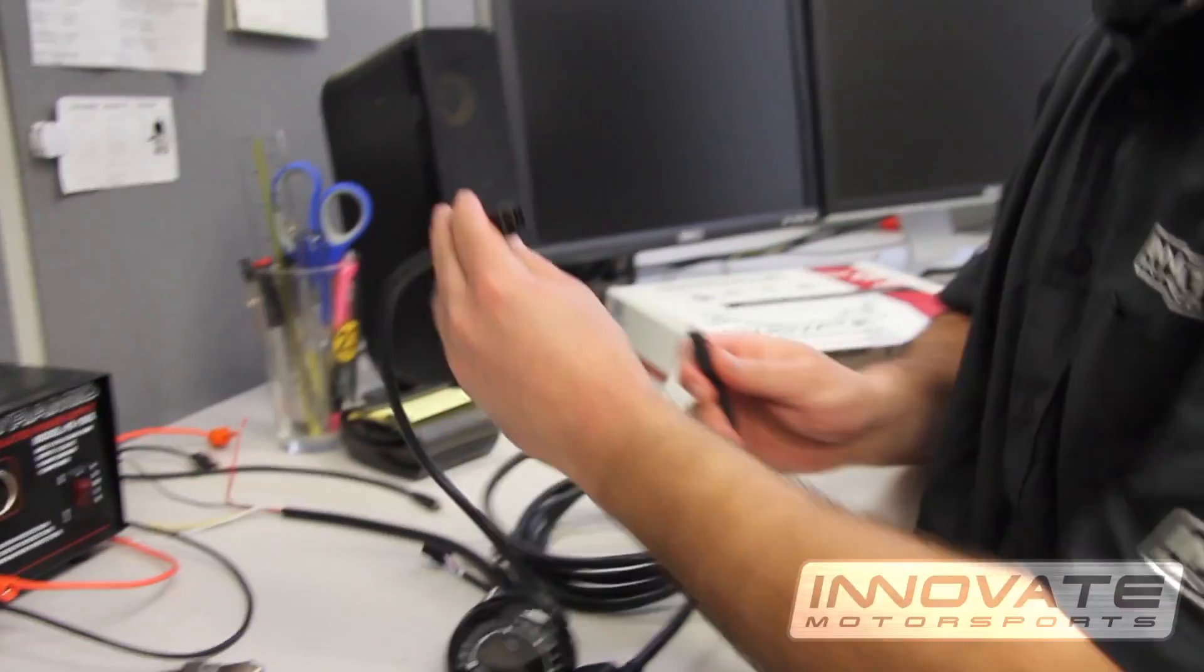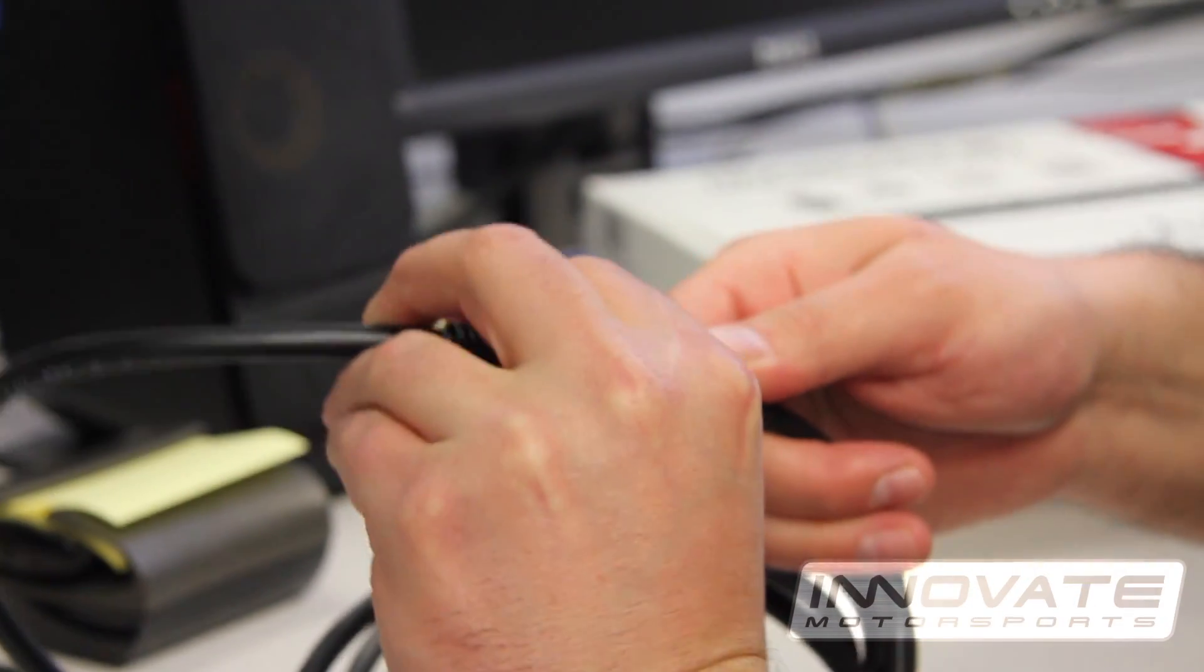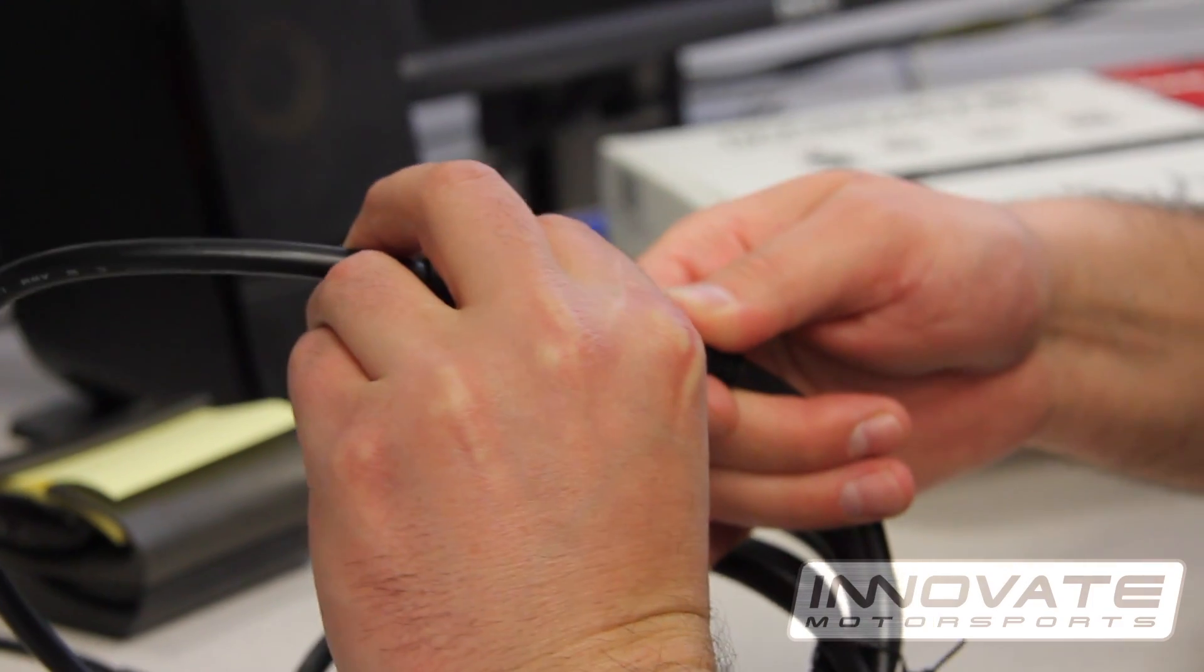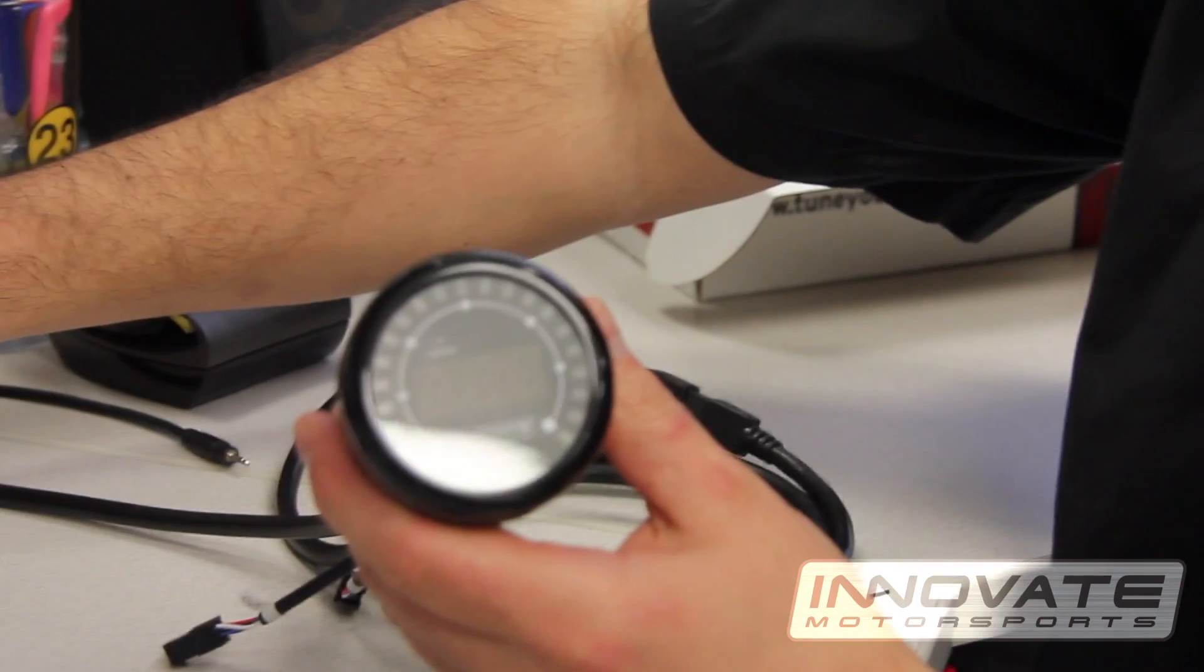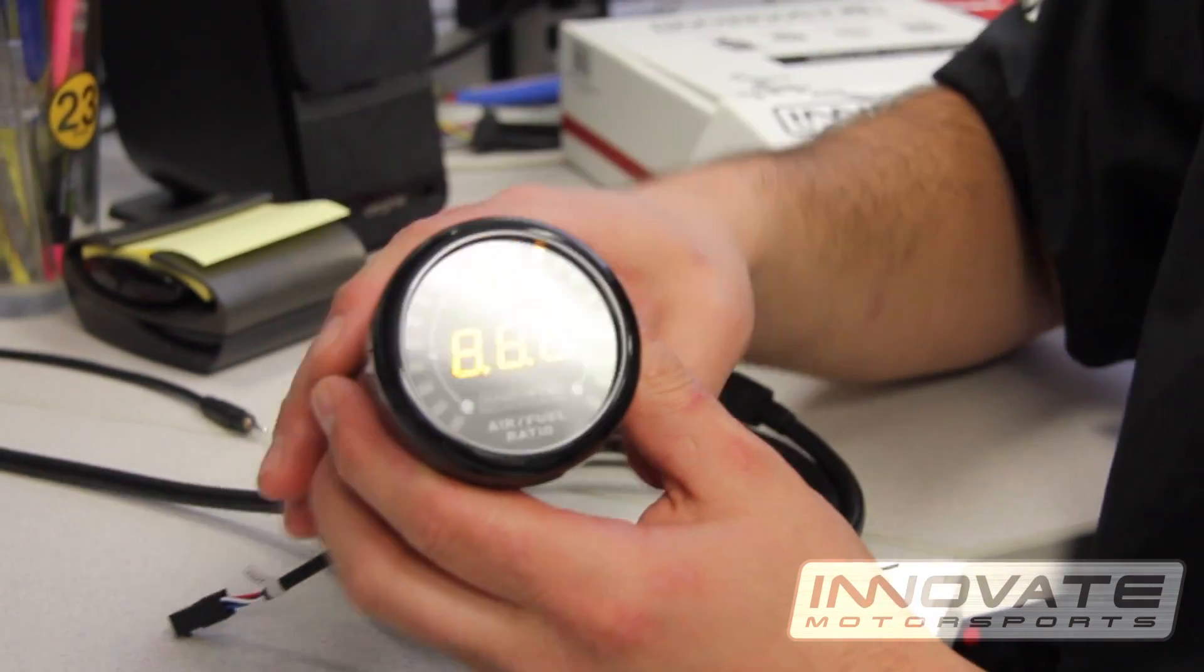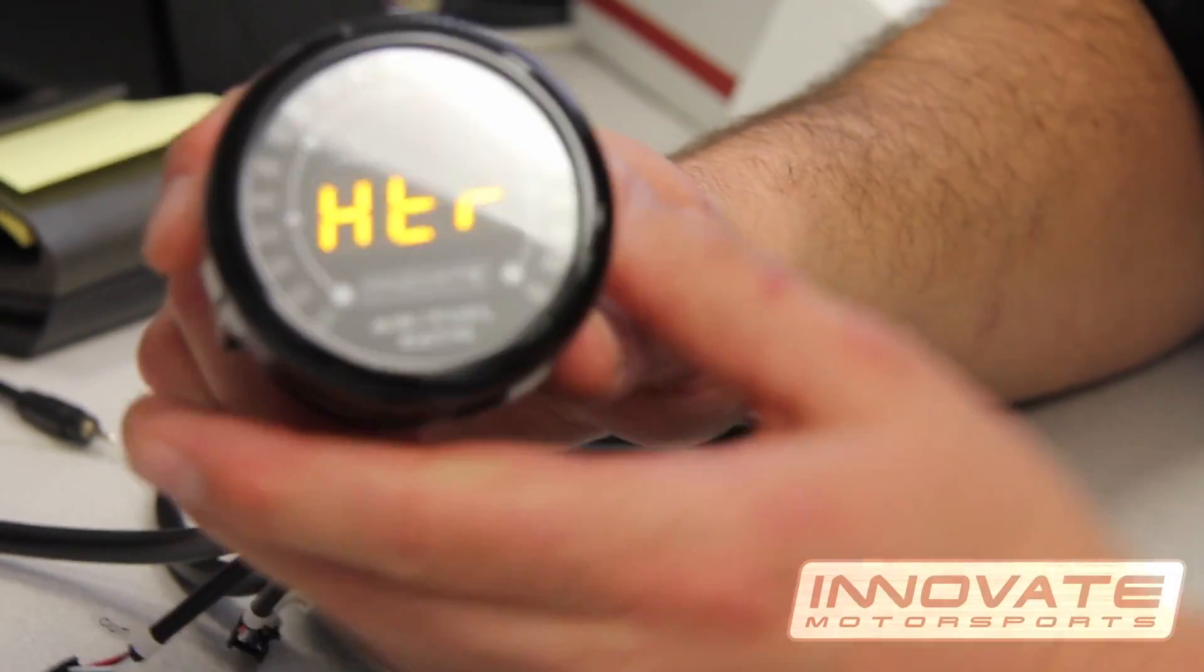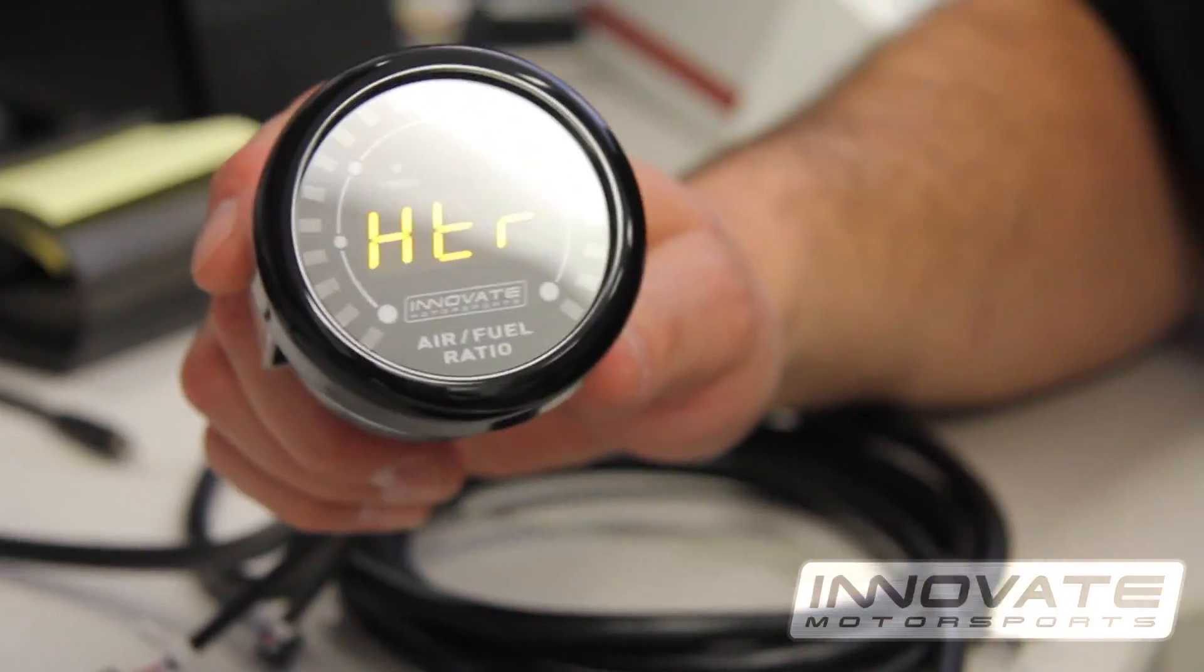Connect the sensor cable to the sensor connector on the gauge and apply power again. The unit will do its initial sweep. The heater indicates that the sensor is warming up.